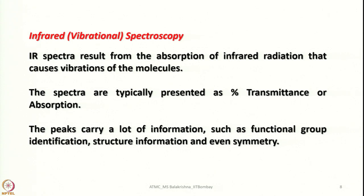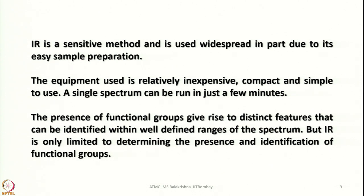Infrared spectroscopy, also called vibrational spectroscopy, produces spectra from the absorption of infrared radiation that causes molecular vibrations. Spectra are typically presented as percentage transmittance or absorption. The peaks carry information such as functional group identification, structural information, and even symmetry. IR is a sensitive and widespread method, partly due to easy sample preparation — we can record in solid state, solution, or even for gaseous molecules. The equipment is relatively inexpensive, compact, and simple to use, and a single spectrum can be run in just a few minutes.